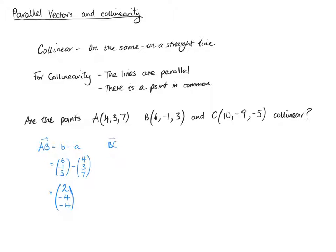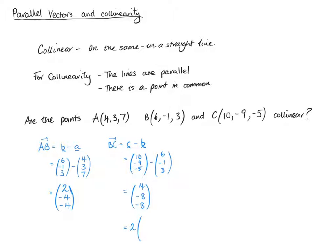And then for our second one, we find BC, which is C take away B: (10, -9, -5) minus (6, -1, 3). So we have 10 take away 6 which is 4, minus 9 take away minus 1 — that's minus 9 plus 1 — which is -8, and then -5 take away 3 which is -8. We can think of that as taking out a factor of 2 to get (2, -4, -4).